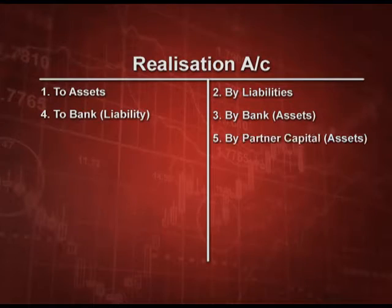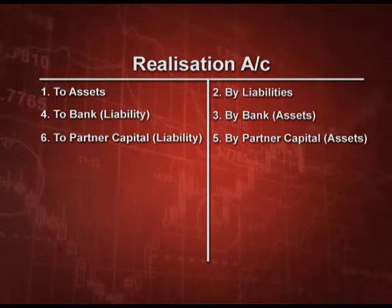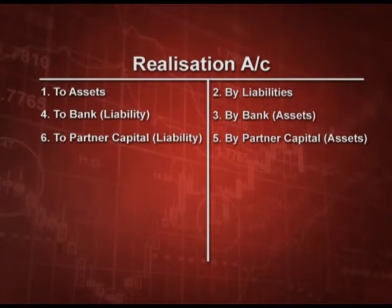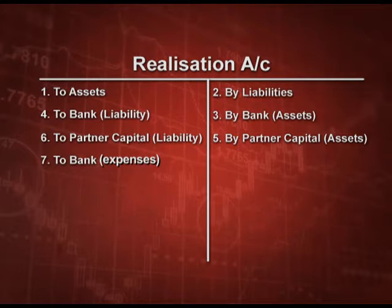If some partner is taking over the asset, the entry will be partner capital account debit to realization account, which will come on the credit side. Similarly, if the liability is paid by the partner, it will come on the debit side — that is, realization account debit to partner capital account. Now, if we are paying the expenses, it will be realization account debit to bank; money is going out, there is an expense, so it is coming on the debit side.